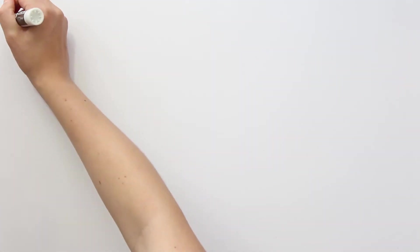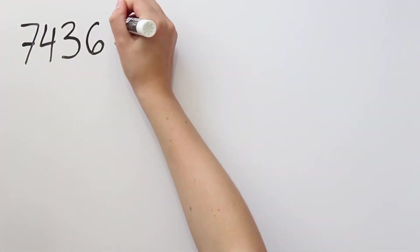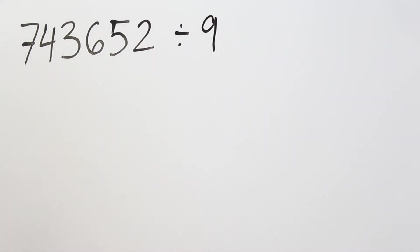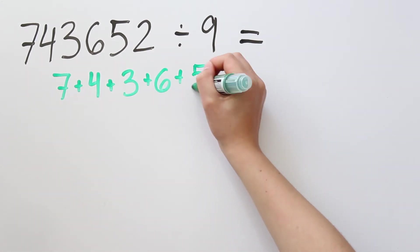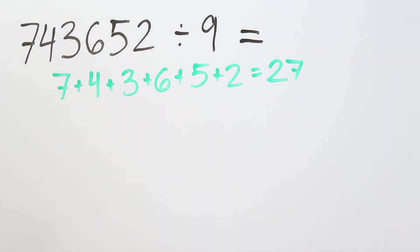Suppose someone asks you if 743,652 is a multiple of 9. You can add up all of the digits, 7 plus 4 plus 3 plus 6 plus 5 plus 2, and that's 27. And since the sum is divisible by 9, then the whole number is.